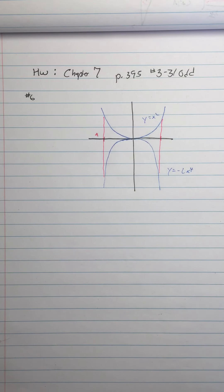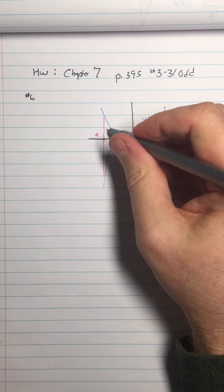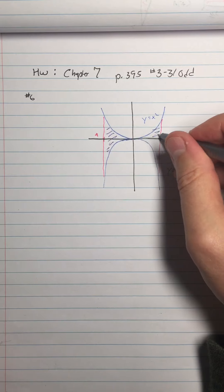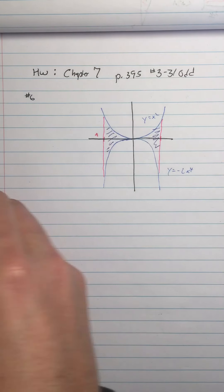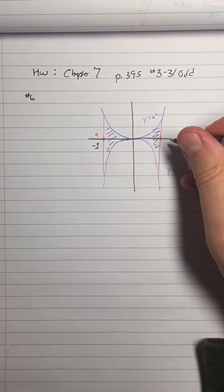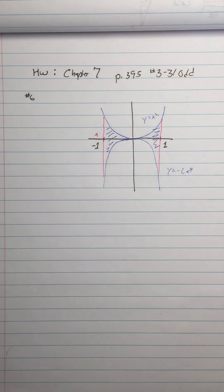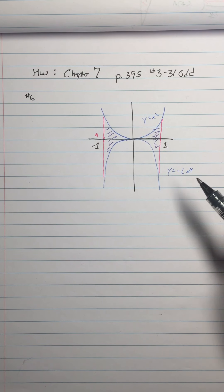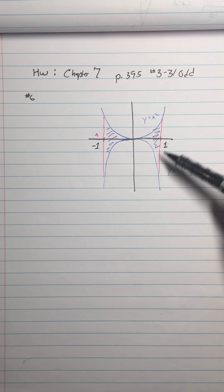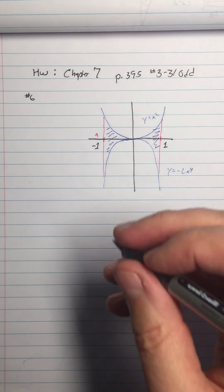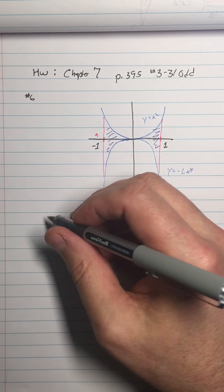Alright, so we are doing this area in here from negative 1 to positive 1. Alright, so here's what's different about this. This is not the area between the curve and the x-axis. It's the area between two curves.